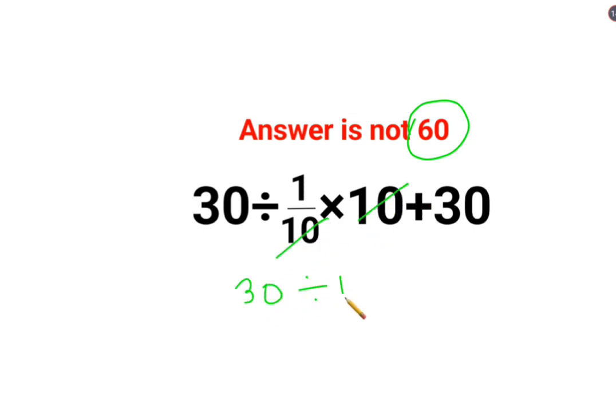So 30 divided by 1 plus 30. So 30 divided by 1 is 30 plus 30. The answer is supposed to be 60. That is wrong.